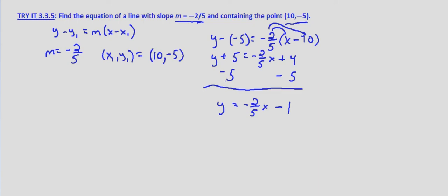Now this does have a slope of negative two-fifths, that we know. And if we wanted to, we could go back and be sure. In fact, let's go ahead and do that just to be sure we didn't make any mistakes. Check, if we plug in our point, we should get a true statement.